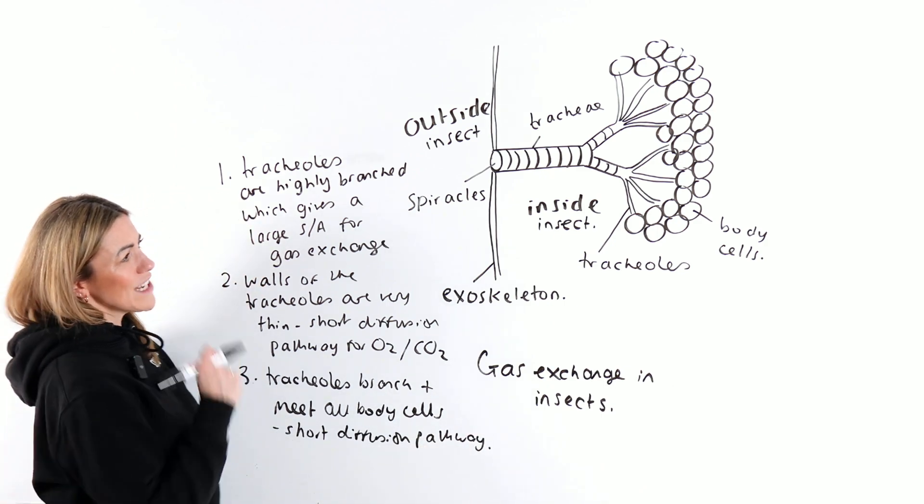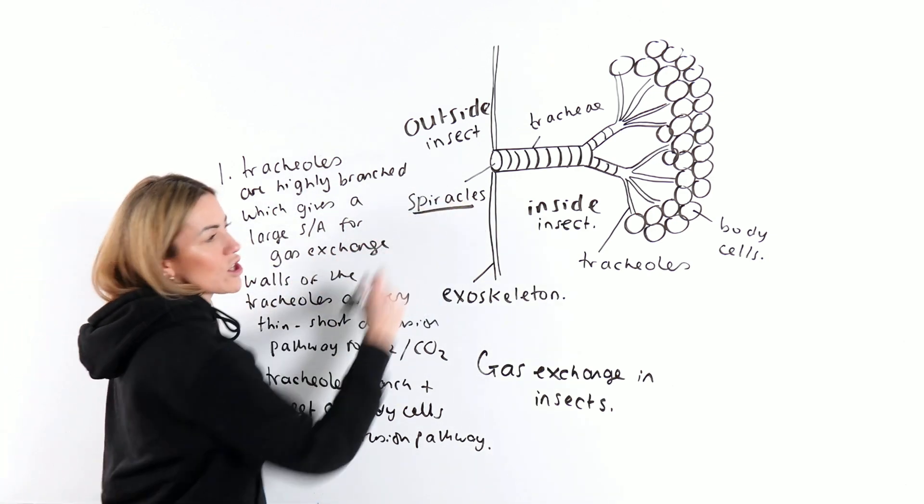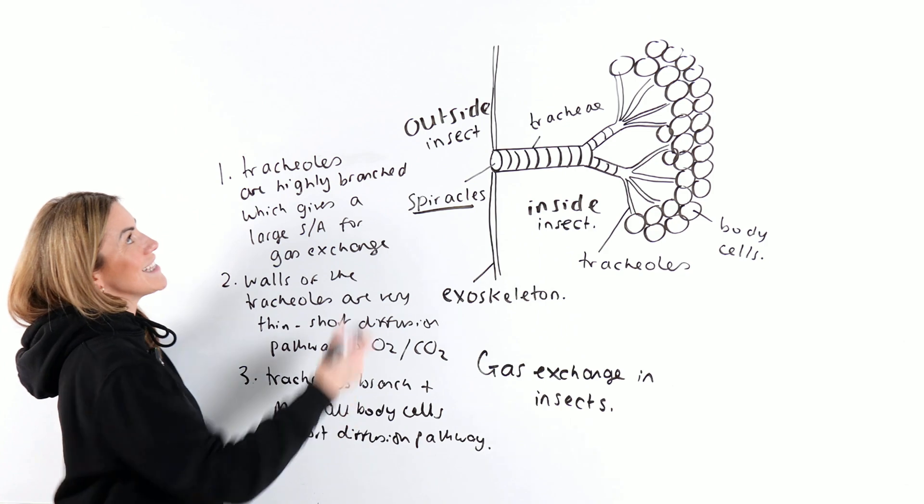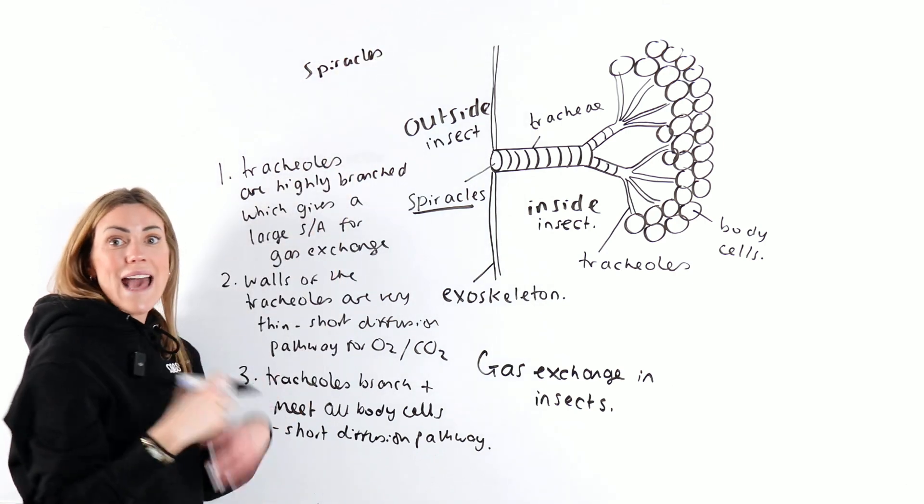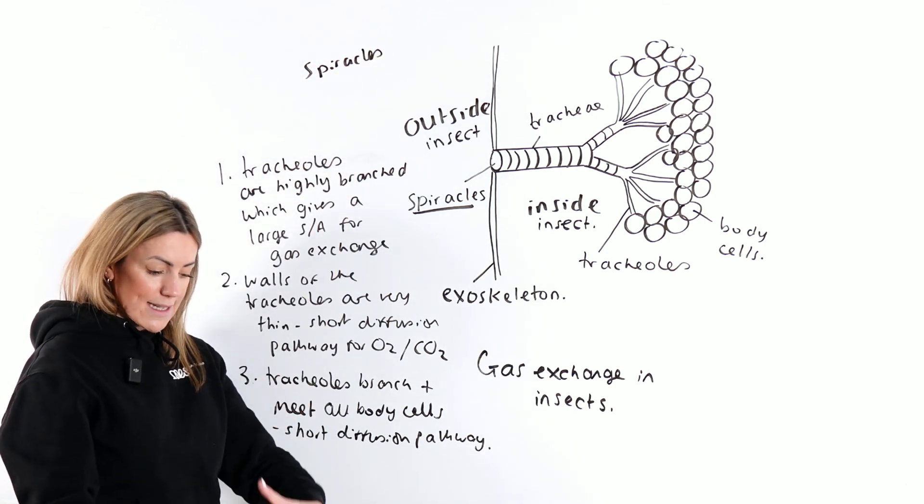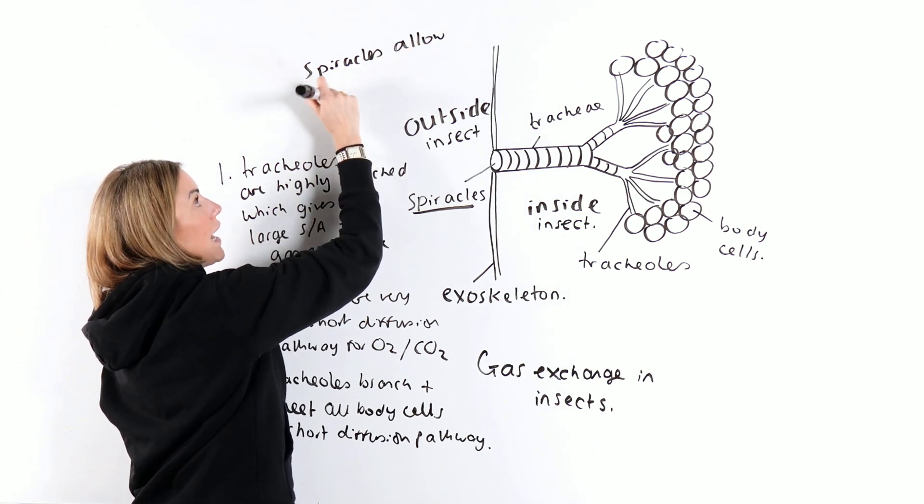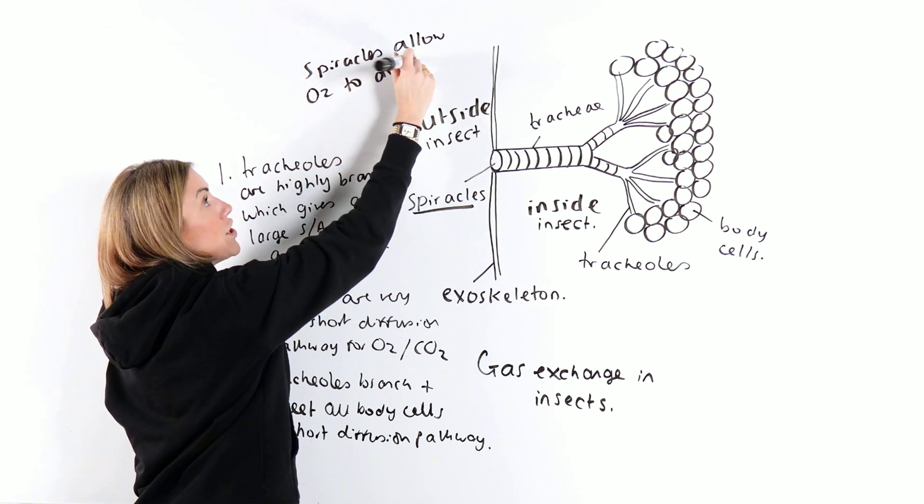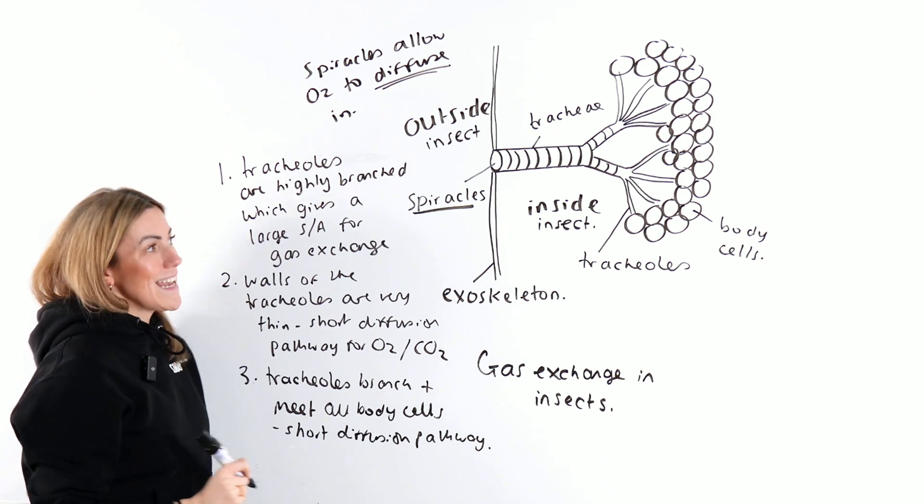We've not actually mentioned the spiracles yet. So let's include something about the spiracles and how oxygen actually gets in. The spiracles are openings on the insect's abdomen and thorax. The spiracles allow oxygen to diffuse in.